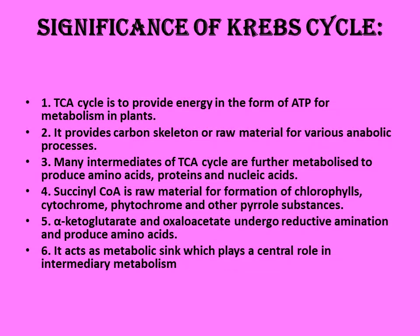The significance of the Krebs cycle: it provides energy in the form of ATP. It provides carbon skeletons for plants. Many intermediates of the TCA cycle are metabolized to produce amino acids, proteins, and nucleic acids. Succinyl-CoA is a raw material for the formation of chlorophyll and cytochrome.